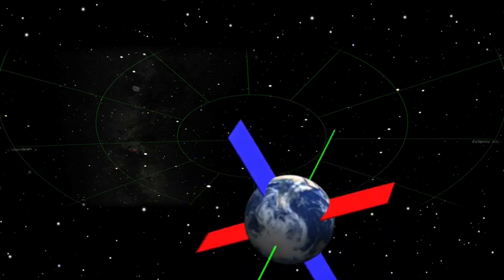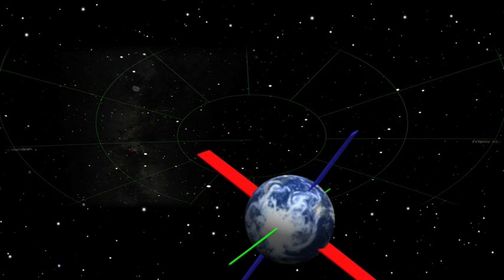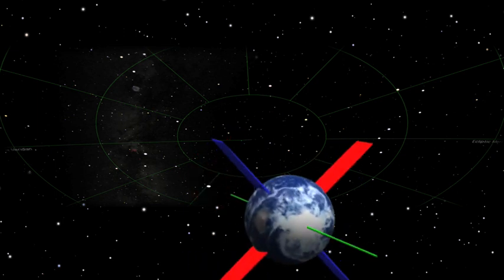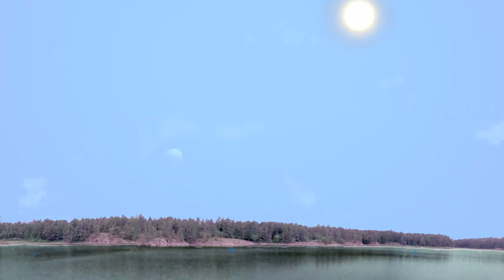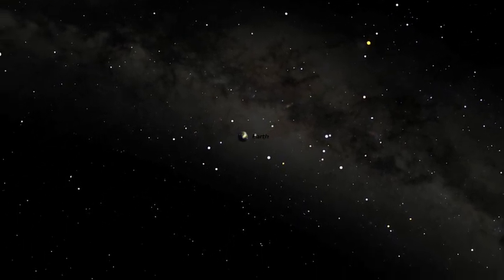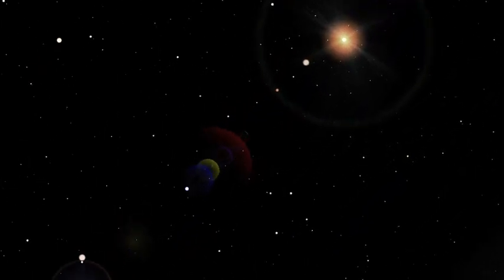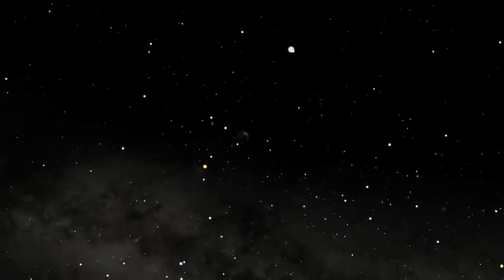And because of the 26,000-year cycle, Vega will be the pole star again in 14,000 years. The precession of the equinoxes is caused primarily by gravitational forces of the Sun and the Moon acting on the Earth. While the axial tilt is the primary cause of seasons on the Earth, the distance from the Sun, which changes throughout the year because of the elliptical shape of the Earth's orbit, contributes a small bit of temperature variations throughout the year as well.